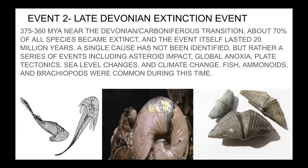The second event was the late Devonian extinction, 375 to 360 million years ago, near the Devonian-Carboniferous transition. About 70% of all species became extinct. The event itself lasted a really long time — about 20 million years. They have not identified a single cause, but a series of events including asteroid impact, global anoxia, plate tectonic sea level change, and climate change. During this time we see fish, ammonites, and brachiopods.